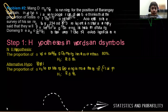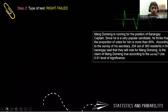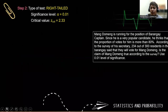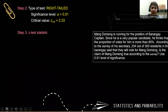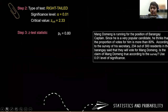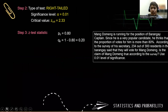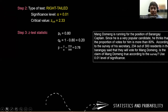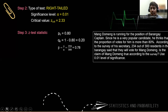Step two: determine the type of test. Obviously, it is a right-tailed test. The significance level alpha is 0.01, and our critical value is 2.33. For step three, the given values are: P sub 0 is 0.8, Q sub 0 is 0.2, and P hat equals 234 over 300, which is 0.78.